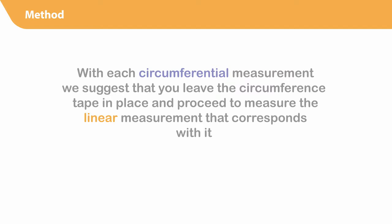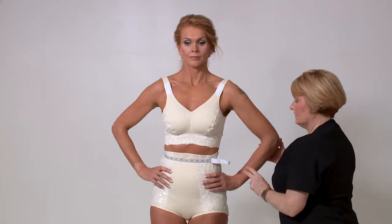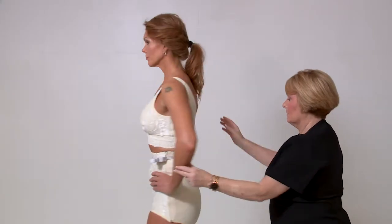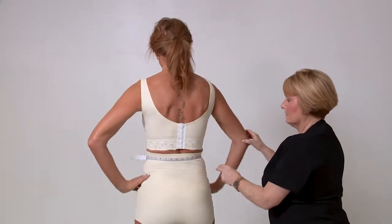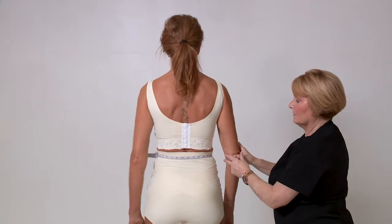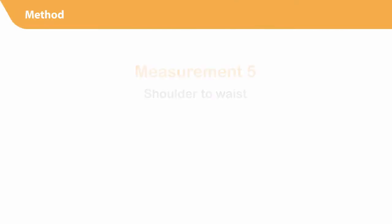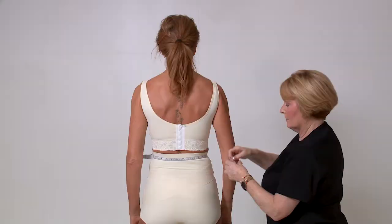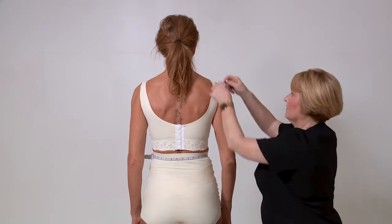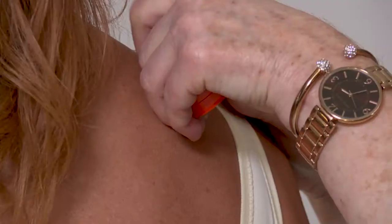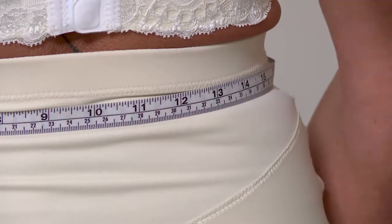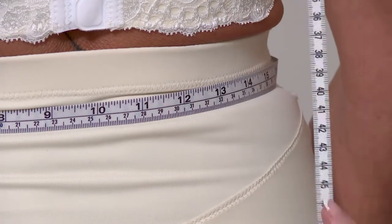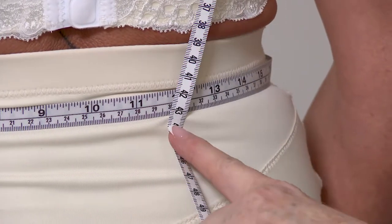With each circumference measurement, we suggest that you leave the circumference tape in place and proceed to measure the linear measurement that corresponds with it. All linear measurements are taken from the back of the patient with a regular measuring tape. Linear measurement number five: shoulder to waist is taken from the top of center shoulder down to the bottom of the waist circumference tape, as demonstrated.